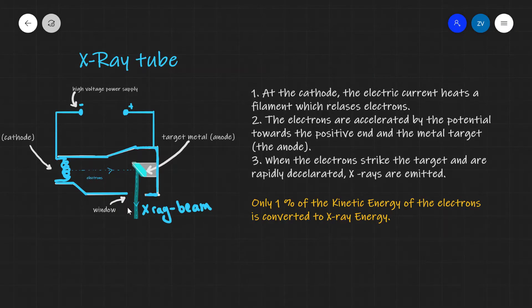So if we were asked to calculate the x-ray energy, for instance, what we need to make sure to find the total x-ray energy will be to find 1% of the kinetic energy, which is sometimes given in the question. But once again, only 1% of the kinetic energy of the electrons is converted to x-ray energy.